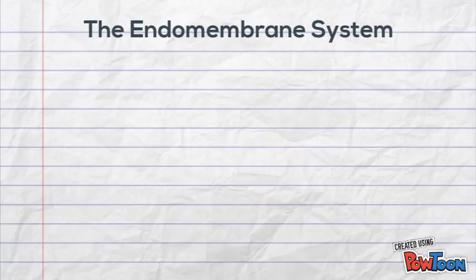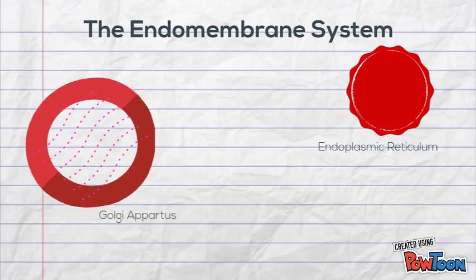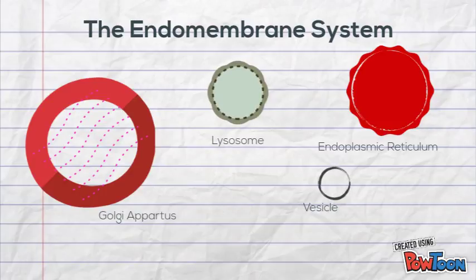The endomembrane system is composed of different membranes located within the cytoplasm of eukaryotic cells, and it divides and separates the cell into functional units. This system includes organelles such as the ER, the Golgi apparatus, lysosomes, vesicles, and the plasma membrane.